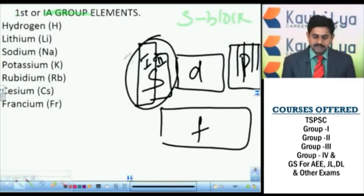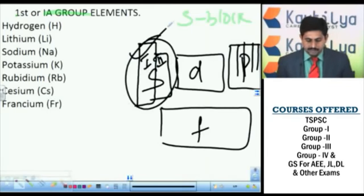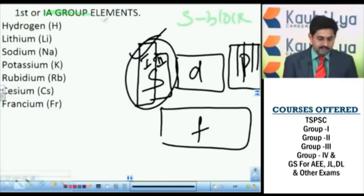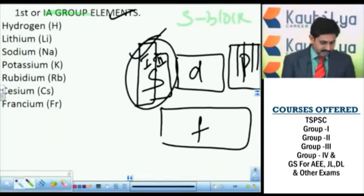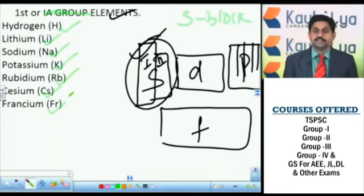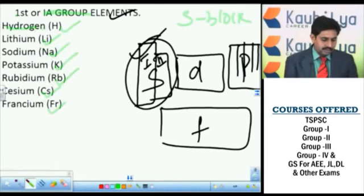We are discussing the s-block elements, specifically the first group elements, also called the 1A group. The elements in this group are hydrogen, lithium, sodium, potassium, rubidium, cesium, and francium.